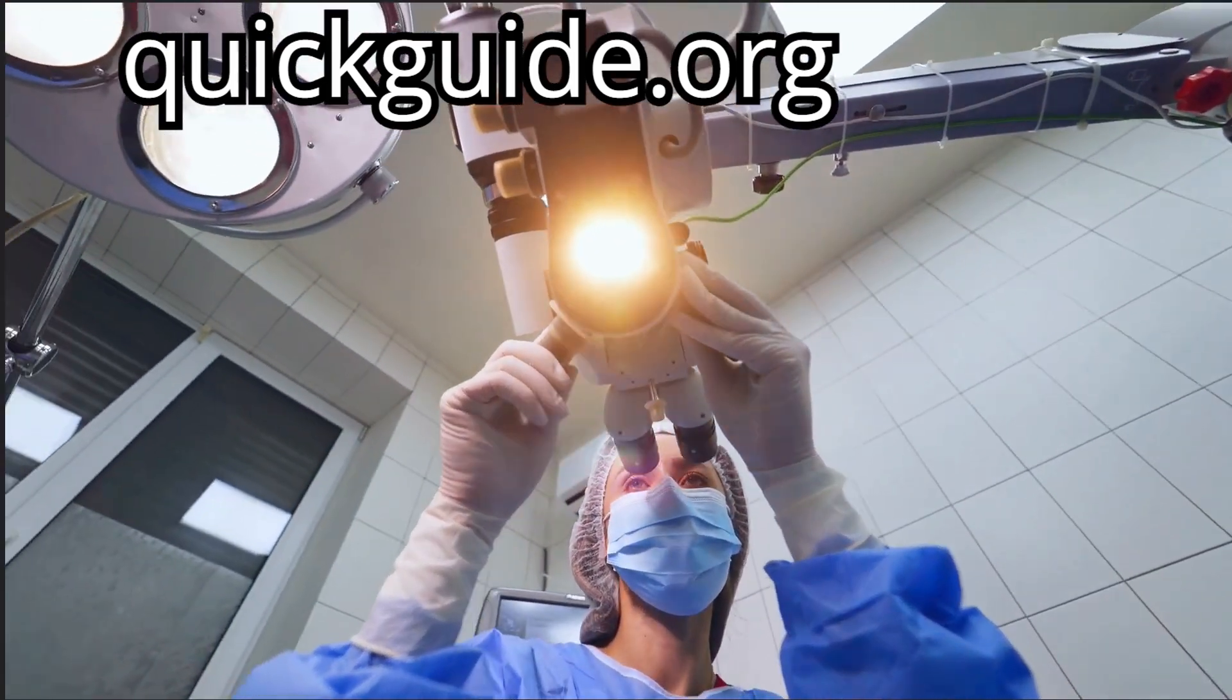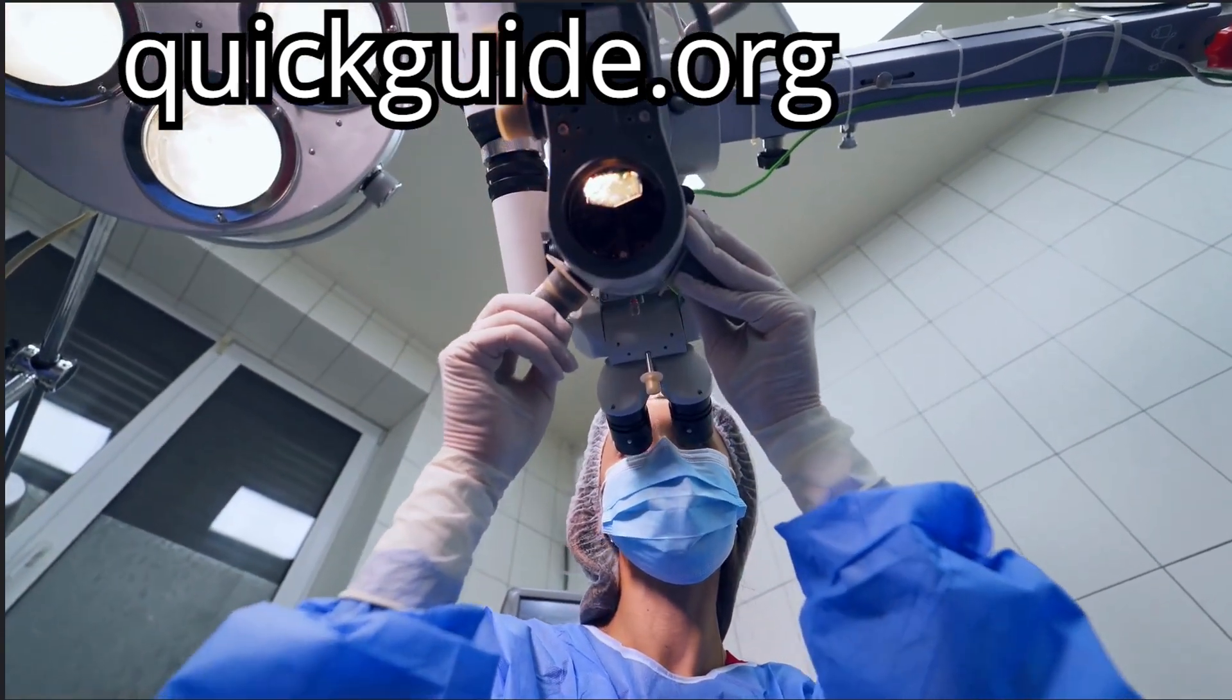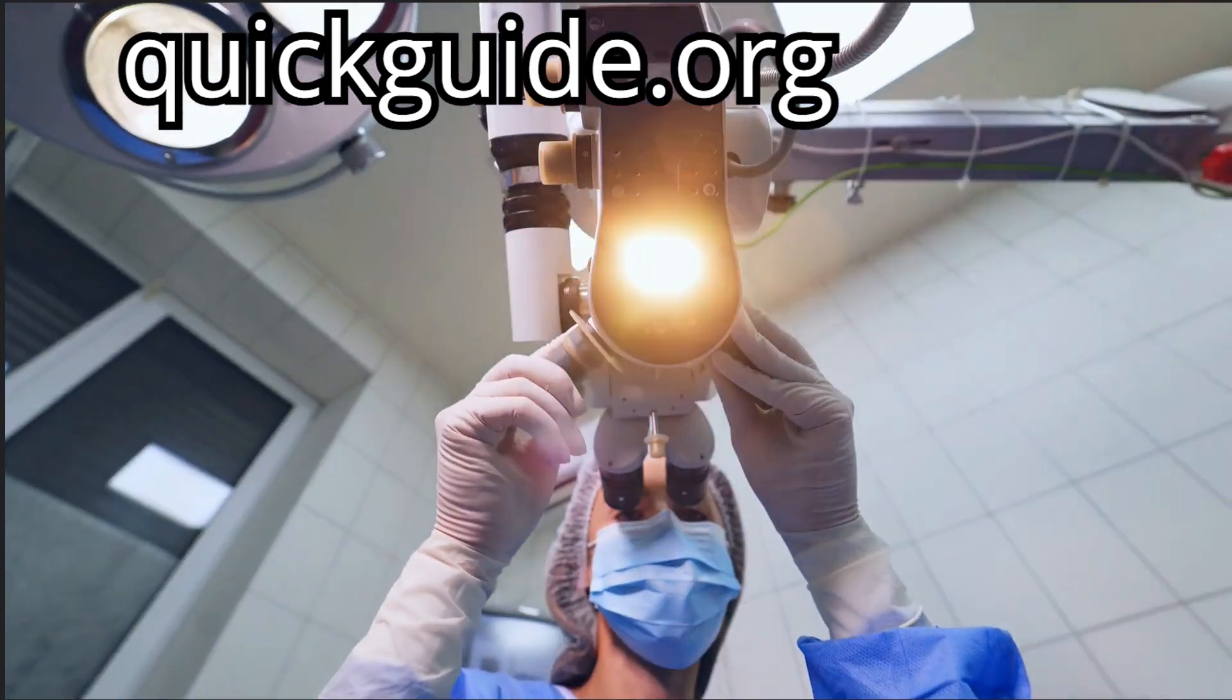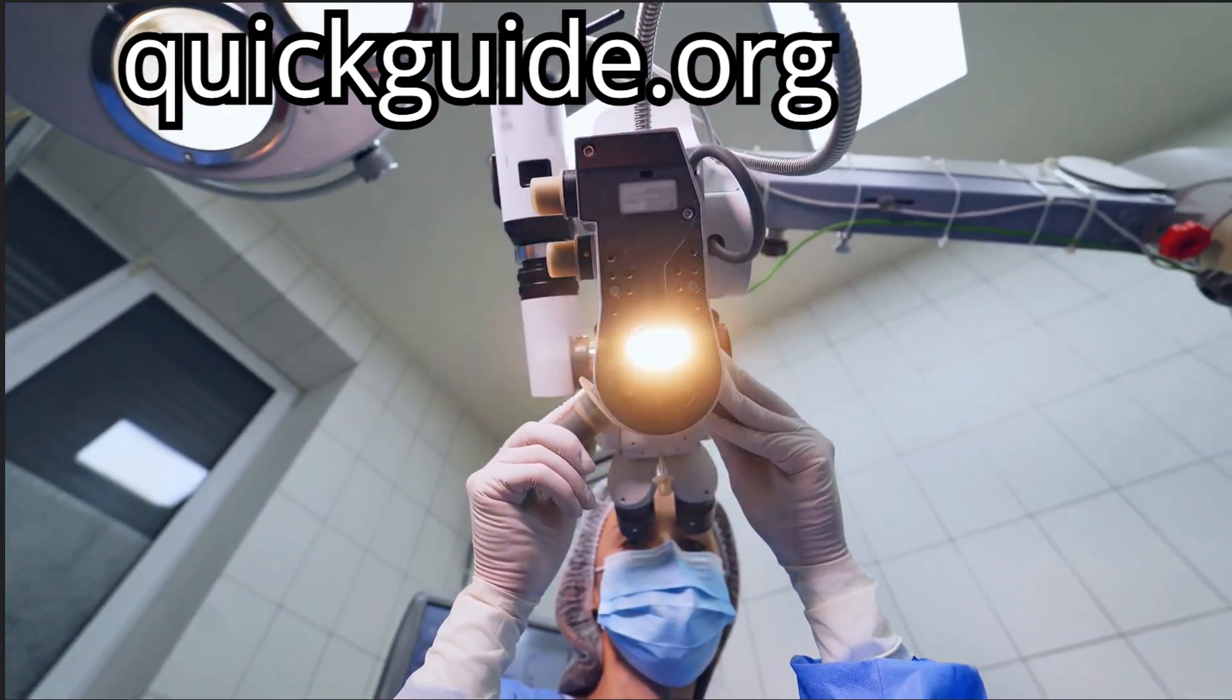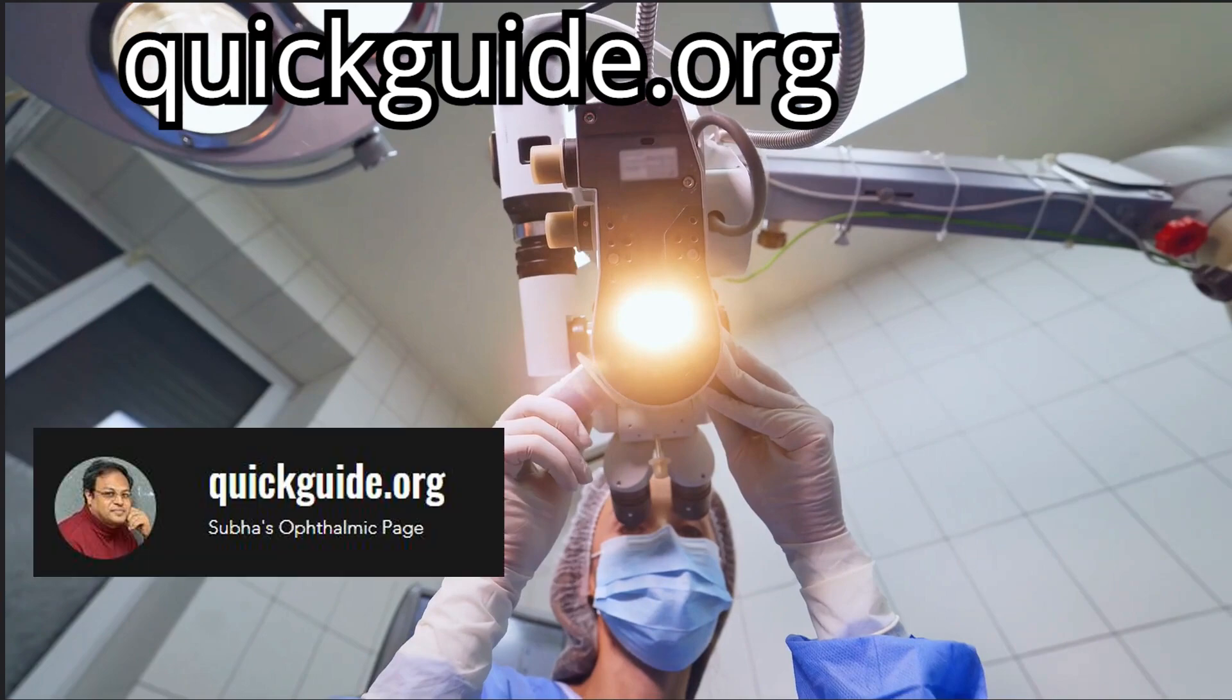The prolate or oblate cornea is identified in corneal topography by the shape factor or Q factor. Going forward with this series, we will talk more about Q factor and the choice of lenses. Keep following quickguide.org.